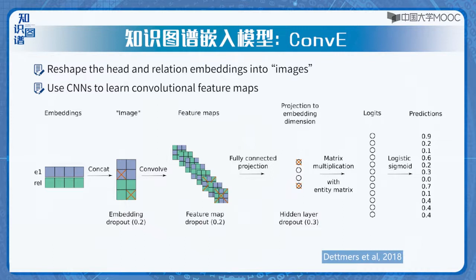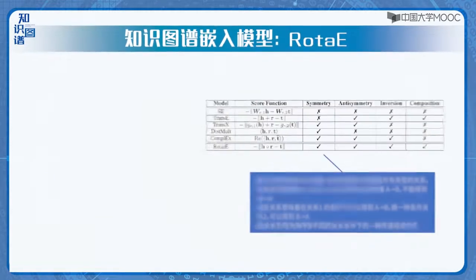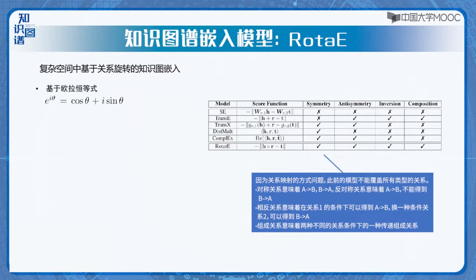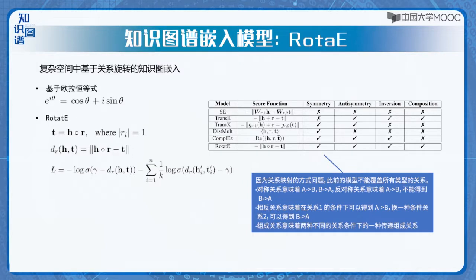已有模型TransE、TransH、DistMult等，无法覆盖所有的关系类型，包括对称关系、逆关系、组合关系。RotatE的动机来源于此，灵感来源于欧拉恒等式，表明可以将虚数单位i视作在复数空间的旋转。具体来说，模型RotatE将实体和关系映射到复数向量空间，并且将每个关系定义为头实体到尾实体的旋转，通过约束关系的模长为1，将关系约束为在复数空间内绕原点旋转。